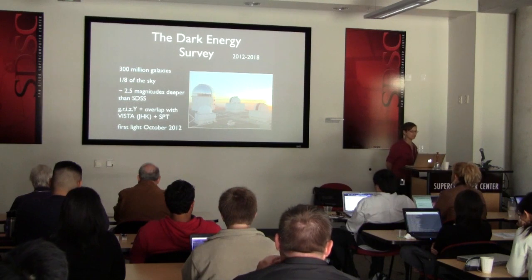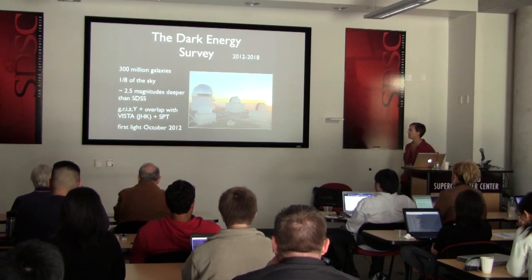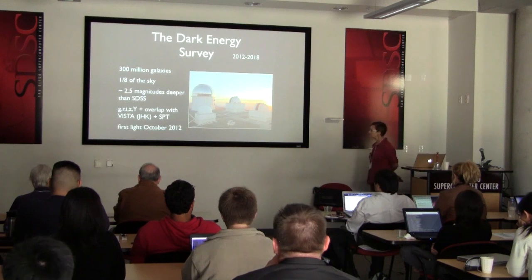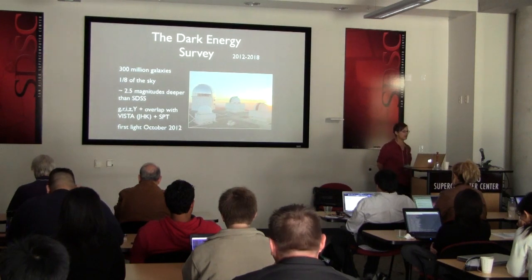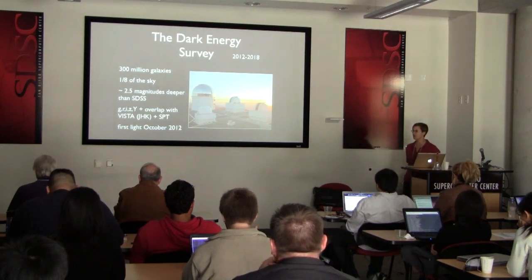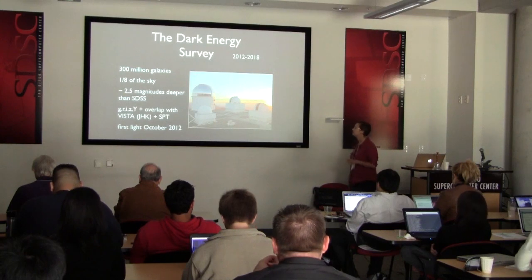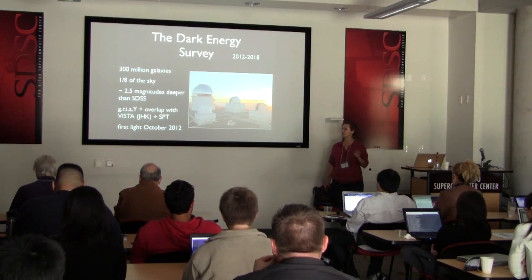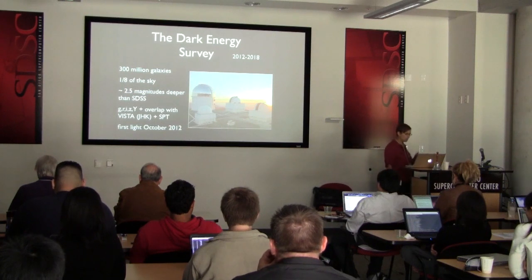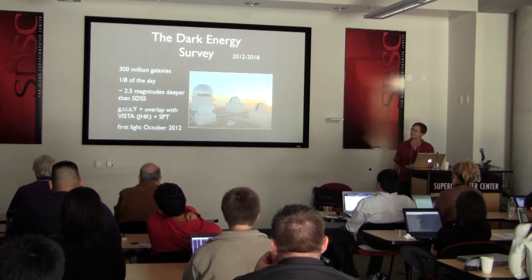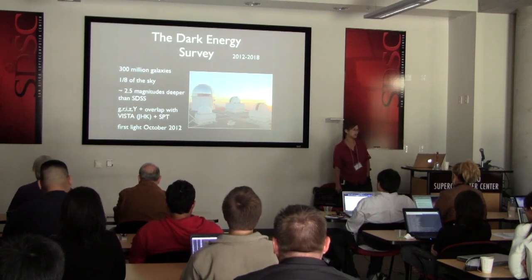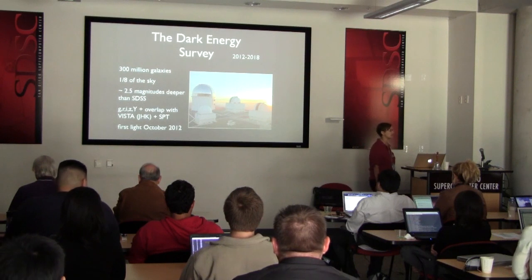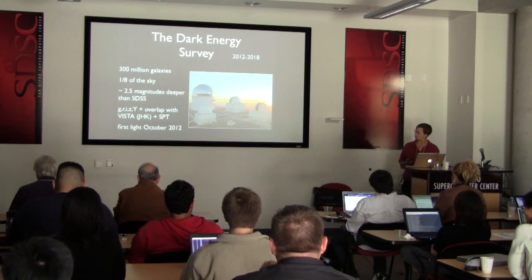The survey would start in mid-December and run for about six years. It will cover 5,000 square degrees — an eighth of the sky — about two and a half magnitudes deeper than Sloan, reaching roughly magnitude 24 in i-band. We expect to observe about 300 million galaxies. There's also overlap with some near-IR data and with the SPT survey, which will have Sunyaev-Zel'dovich measurements for all of the galaxy clusters.